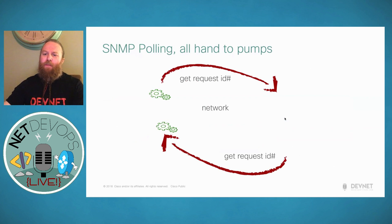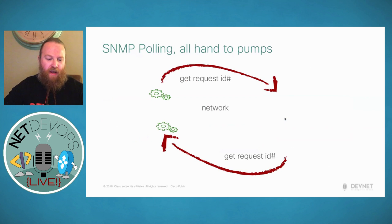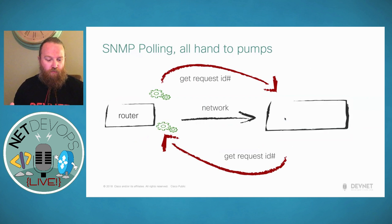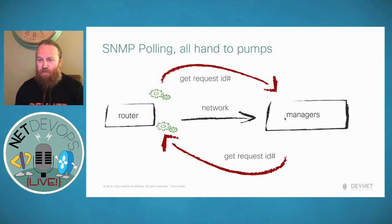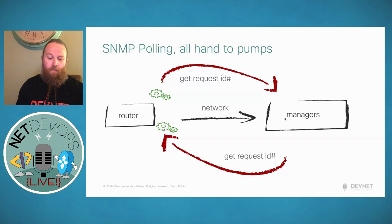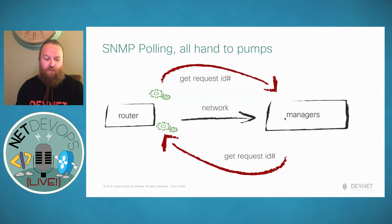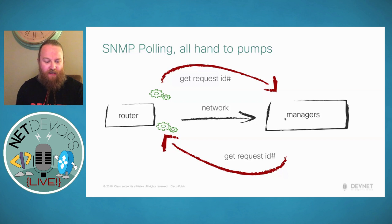In SNMP we have two kinds of entities: managers and agents. The router here is the agent, and the managers — depicted on the right-hand side — are servers running software that can handle management traffic. Managers are often referred to as NMS, or network management solutions. They're responsible for polling and receiving traps against our network — routers, switches, firewalls, load balancers. The agent is a piece of software that runs on the network device you are managing, now incorporated into operating systems like Cisco IOS XR.